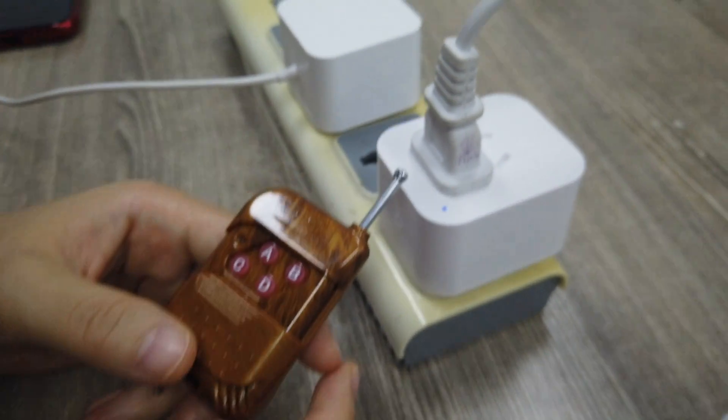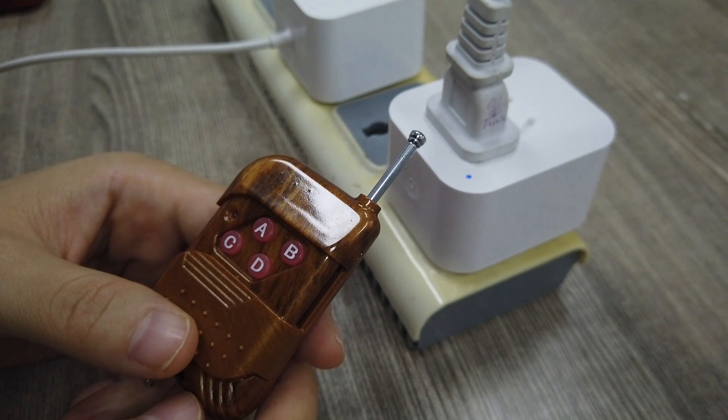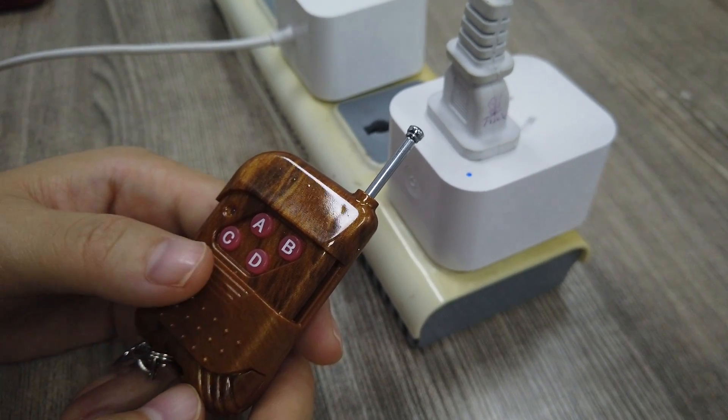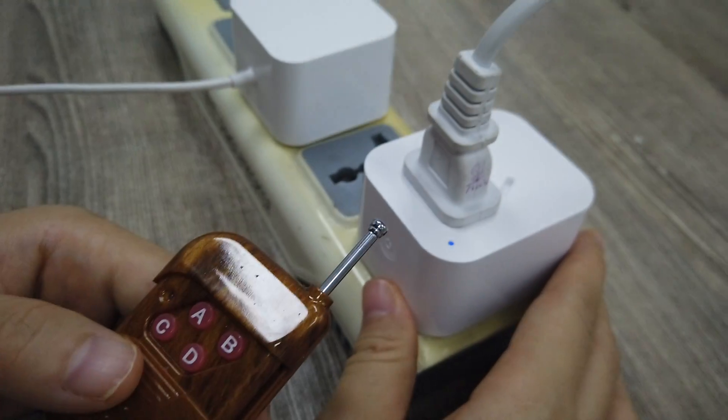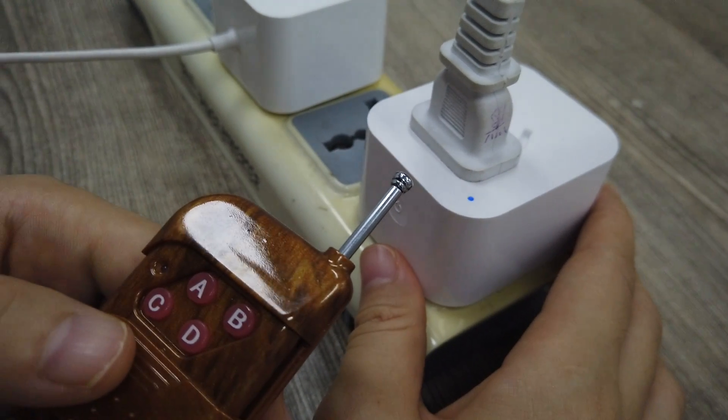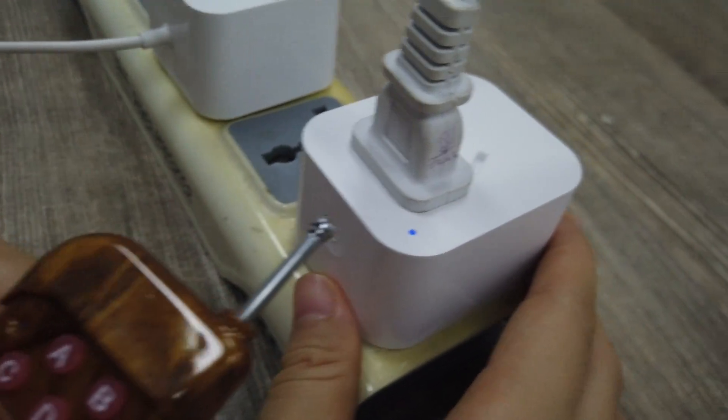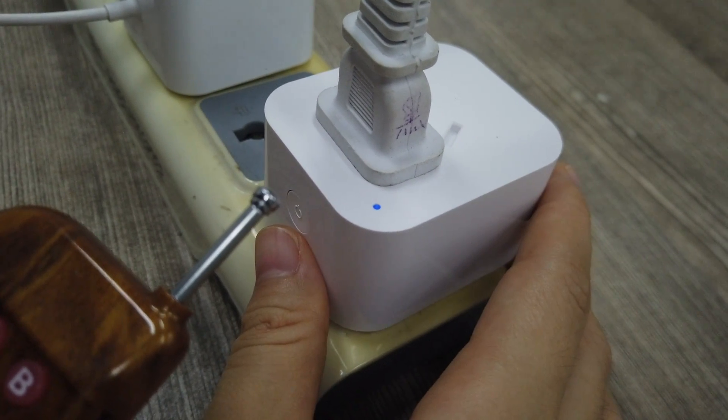Hi guys, today I will teach you how to use a 433 wireless remote control with our 2R smart socket. The first function is self-locking. We just press the smart socket button two times.